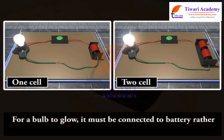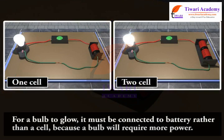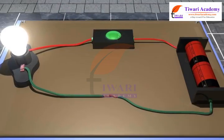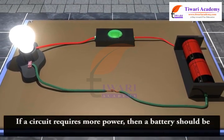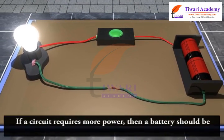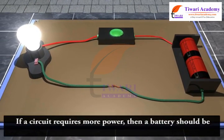For a bulb to glow, it must be connected to a battery rather than a cell, because a bulb will require more power. So if a circuit requires more power, then a battery should be connected.